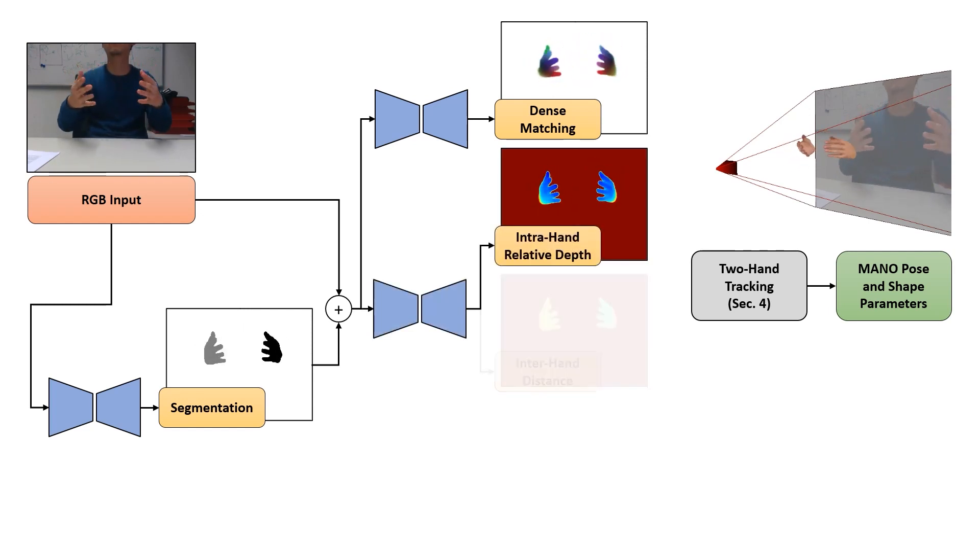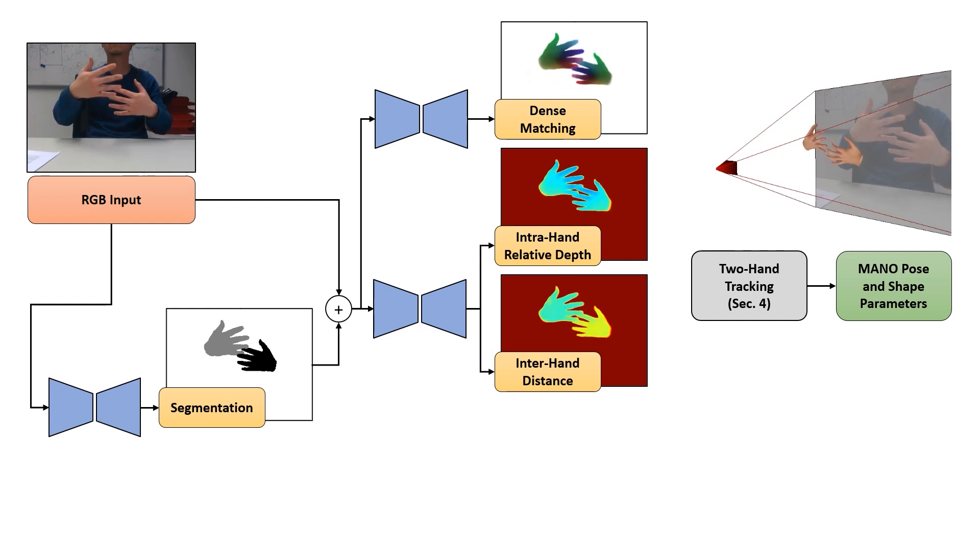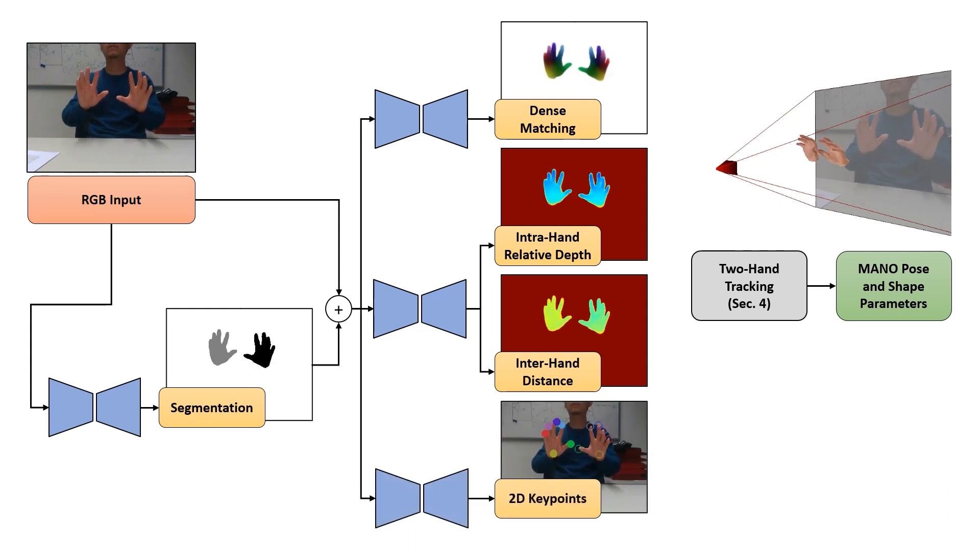Intra-hand relative depth and intra-hand distances to address the inherent depth and scale ambiguities in monocular RGB data by learning a strong prior from training data. Sparse and robust 2D keypoint locations to further improve pose accuracy.